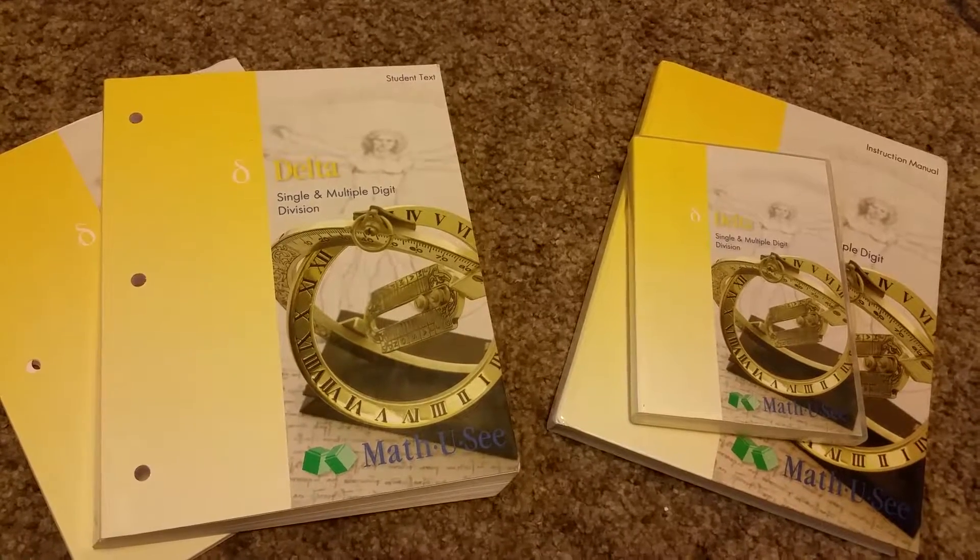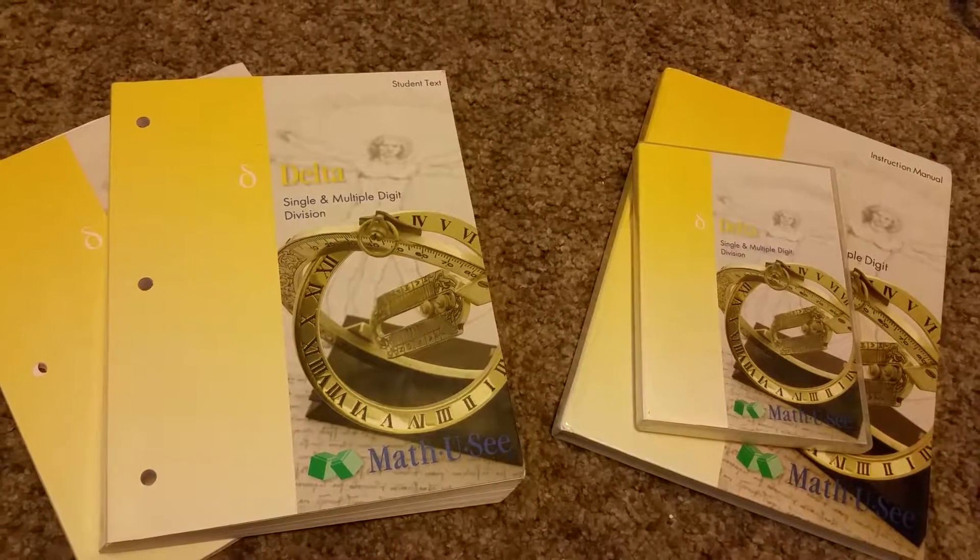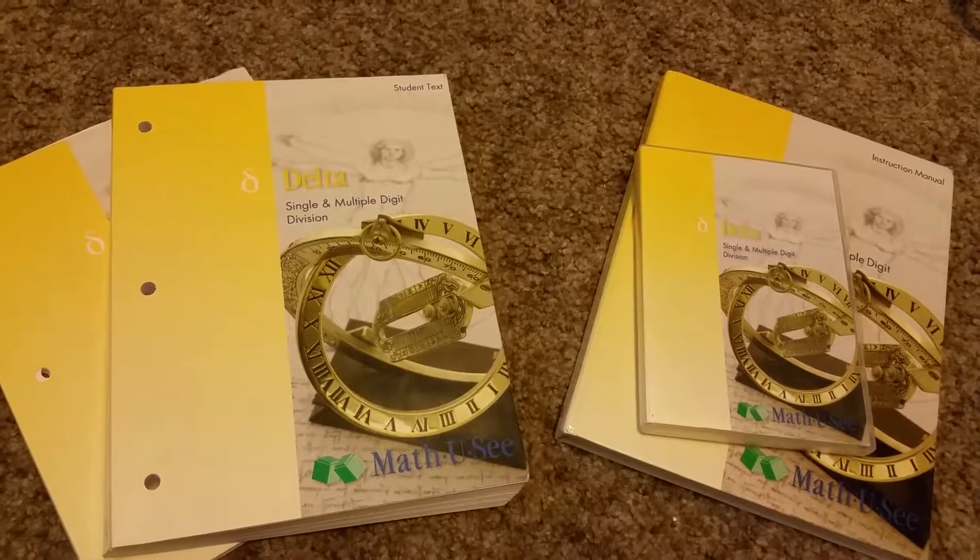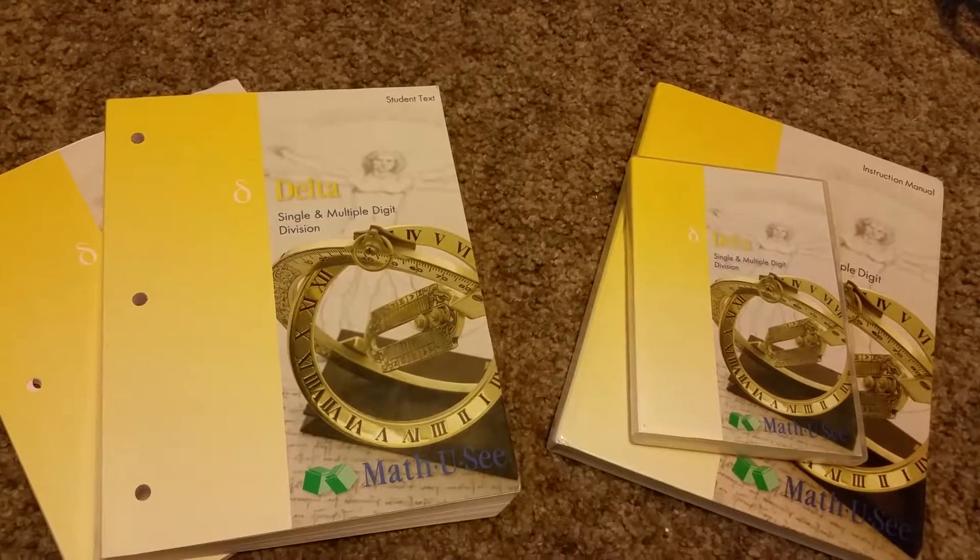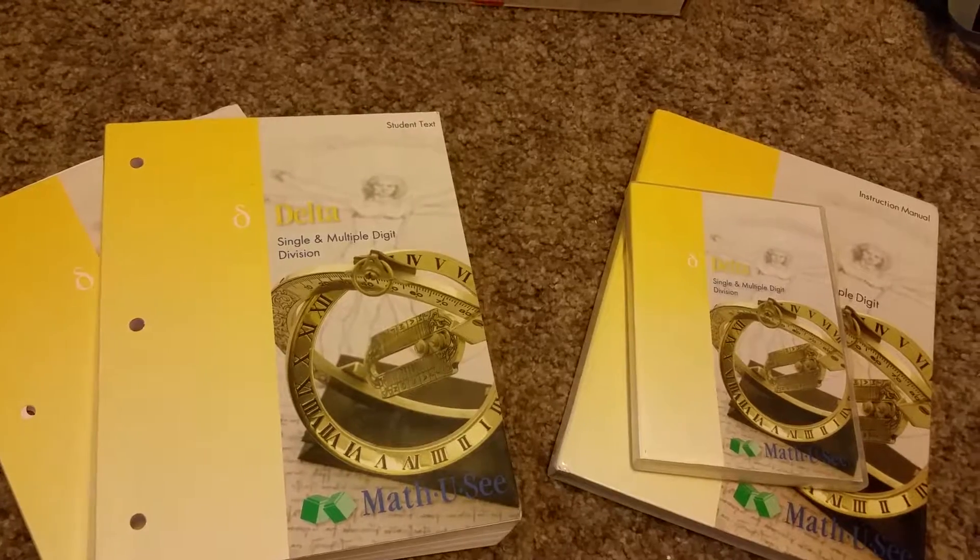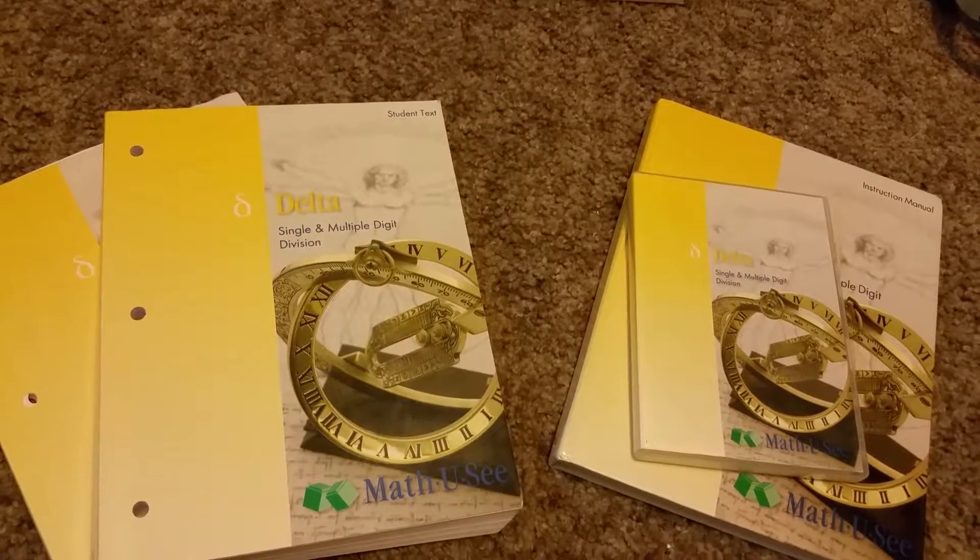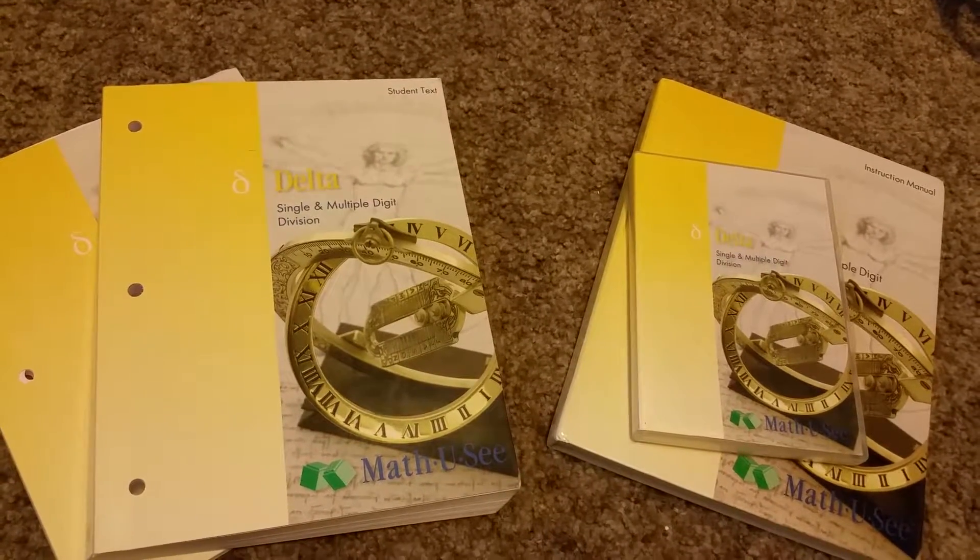All right, so this is Delta for Math-U-See. If you have been following along, the primer is the equivalent to kindergarten, and then Alpha, Beta, Gamma. So this is Delta, the next one in line. This is about fourth grade.